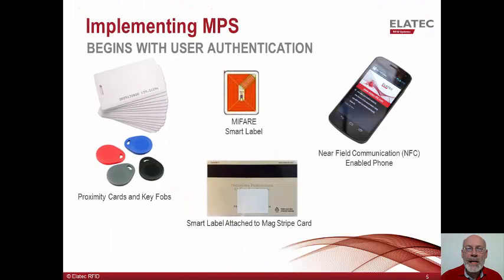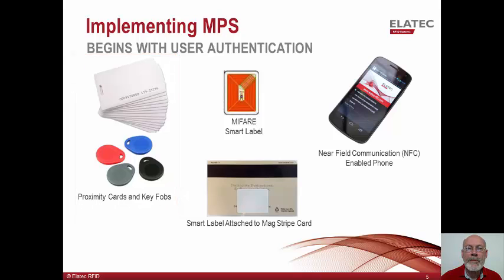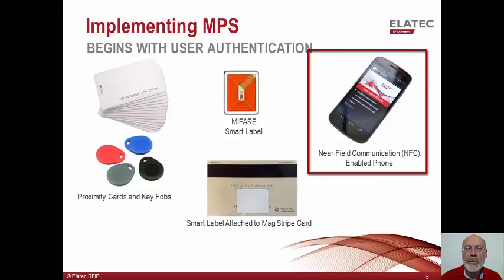This slide shows authentication devices which use radio frequency, or RF, to communicate with a card reader. On the left are radio frequency proximity cards and key fobs, which are often referred to as contactless cards or transponders. These are commonly used for building access control and user authentication to manage printing. They are offered in a number of different technologies, which will be shown momentarily. On the right is a smartphone which uses near-field communication, or NFC. NFC is a global technology which has evolved from existing ISO standards created by the proximity card industry.